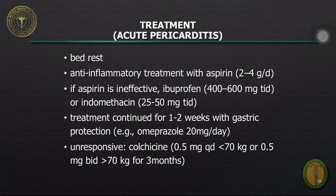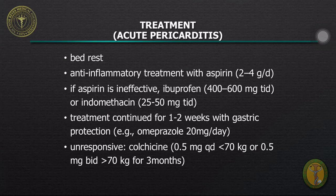In cases of multiple, frequent, disabling recurrences that continue for more than 2 years and are not prevented by continuing colchicine and other non-steroidal anti-inflammatory drugs, and are not controlled by glucocorticoids, azathioprine or anakinra — which is an interleukin-1-beta receptor antagonist — may be tried. Pericardial stripping is rarely necessary and may not always terminate recurrences.